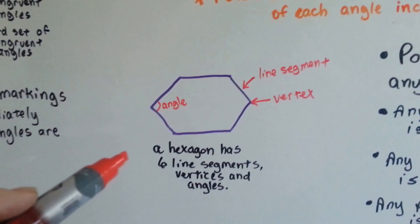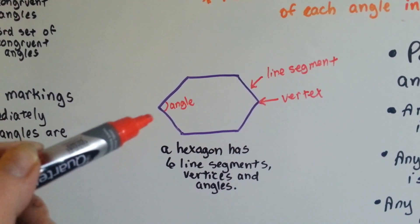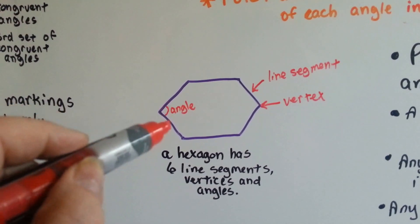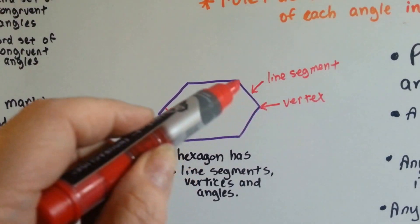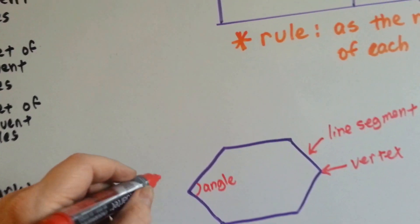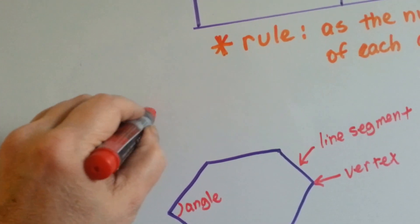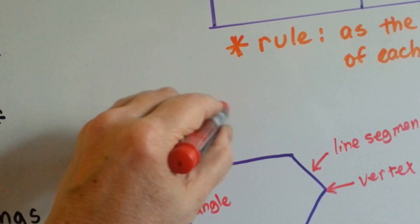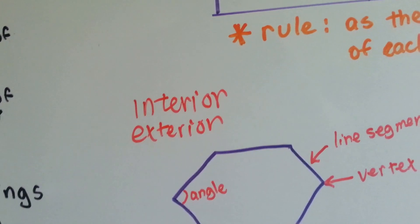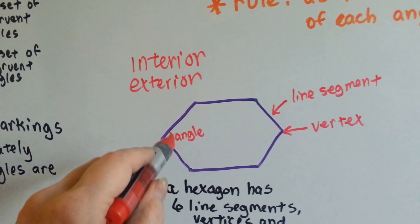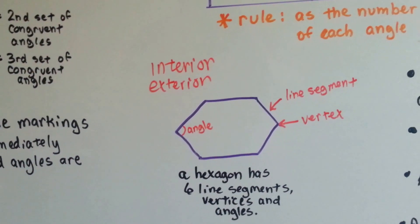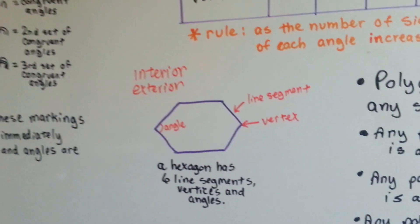A hexagon has six line segments, vertices, and angles. That's an interior angle — an inside angle. This is a line segment, and this little pointy part is the vertex. So there are interior angles and exterior angles.